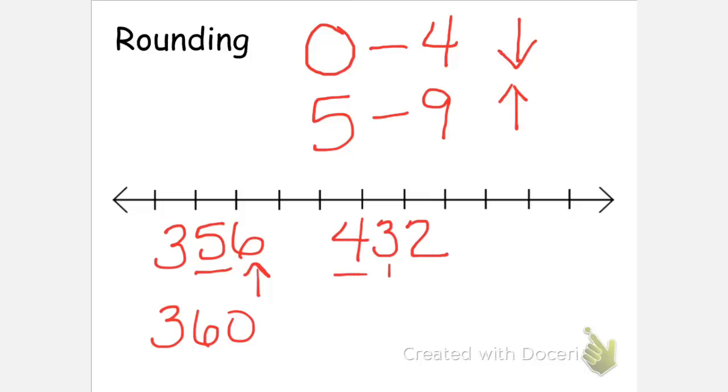If you have the number 432 and we want to round that to the hundreds place, we would look at the digit directly to the right of that, the 3. And that 3 is in between 0 and 4, and so that tells us to round the number down to 400.